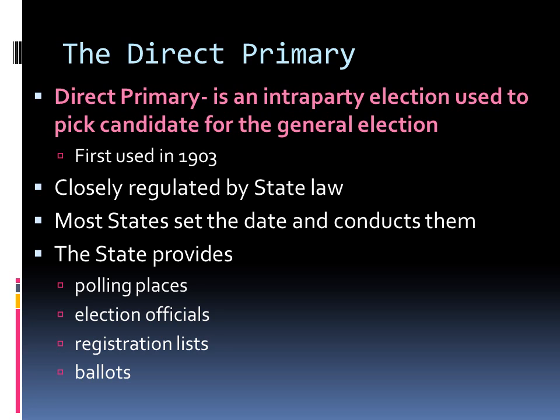The state usually sets the dates on which primaries are held, and it regularly conducts them too. The state, not the parties, provides polling places and election officials, registration lists and ballots, and other resources to the process. There are two basic forms of the direct primary, which we're going to talk about tomorrow: the closed primary and the open primary. The major difference between the two lies in the answer to the question: who can vote in a party's primary? Only qualified voters who are party members, or any qualified voter — which we will answer tomorrow.